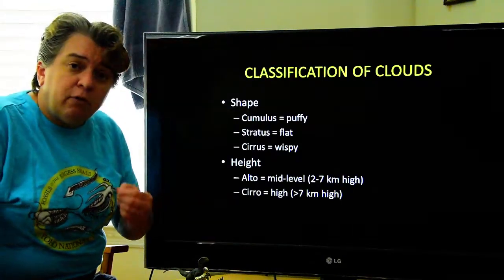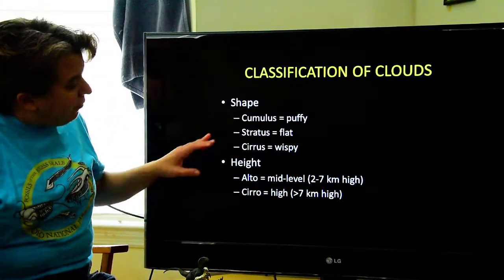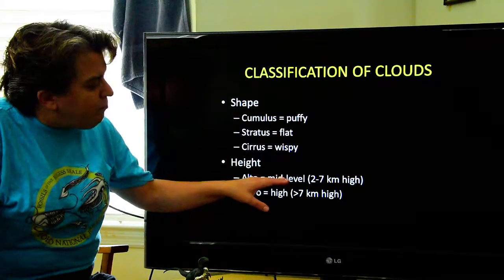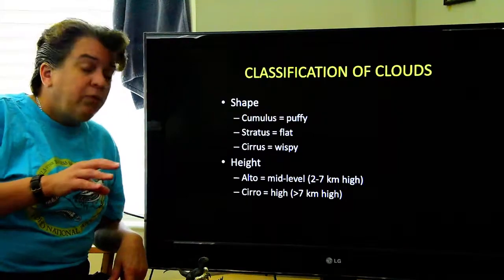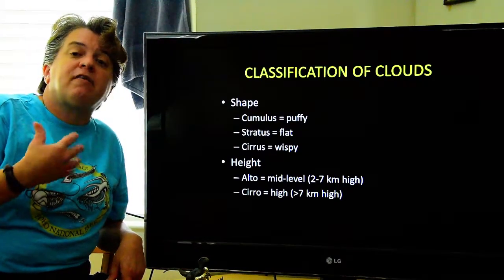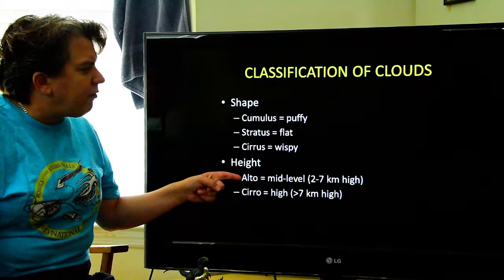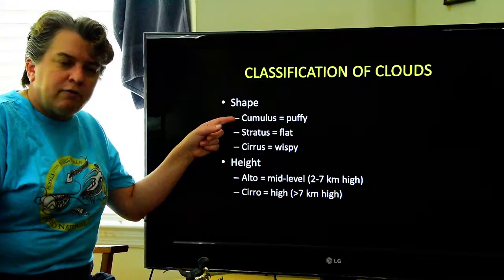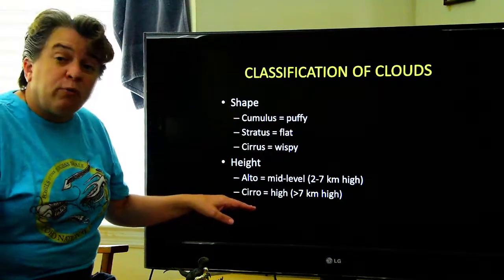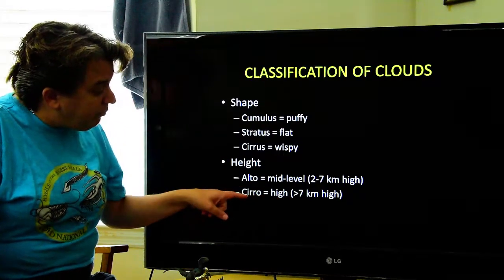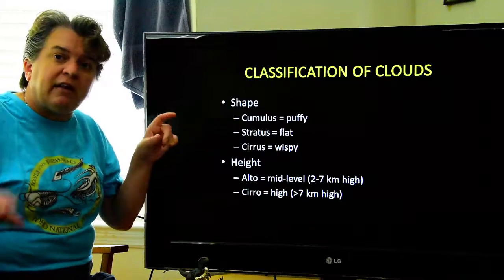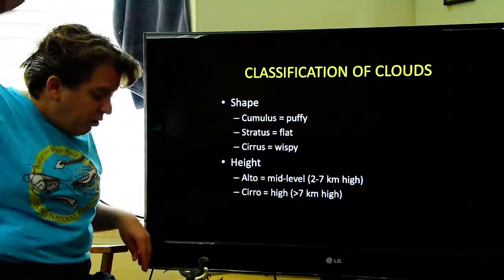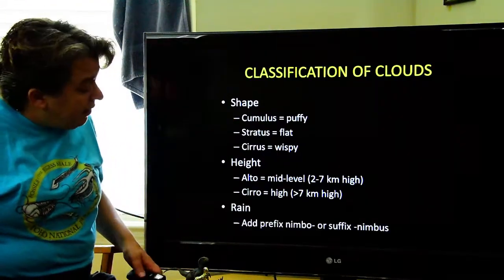Now we also look at the height. So if they're what's called mid-level, meaning two to seven kilometers high, we add the prefix alto. So we might say, oh, there's some altocumulus clouds. Or if they're really high, greater than seven kilometers, we say cirro. So you might say cirrocumulus clouds if they're puffy clouds really high in the sky.